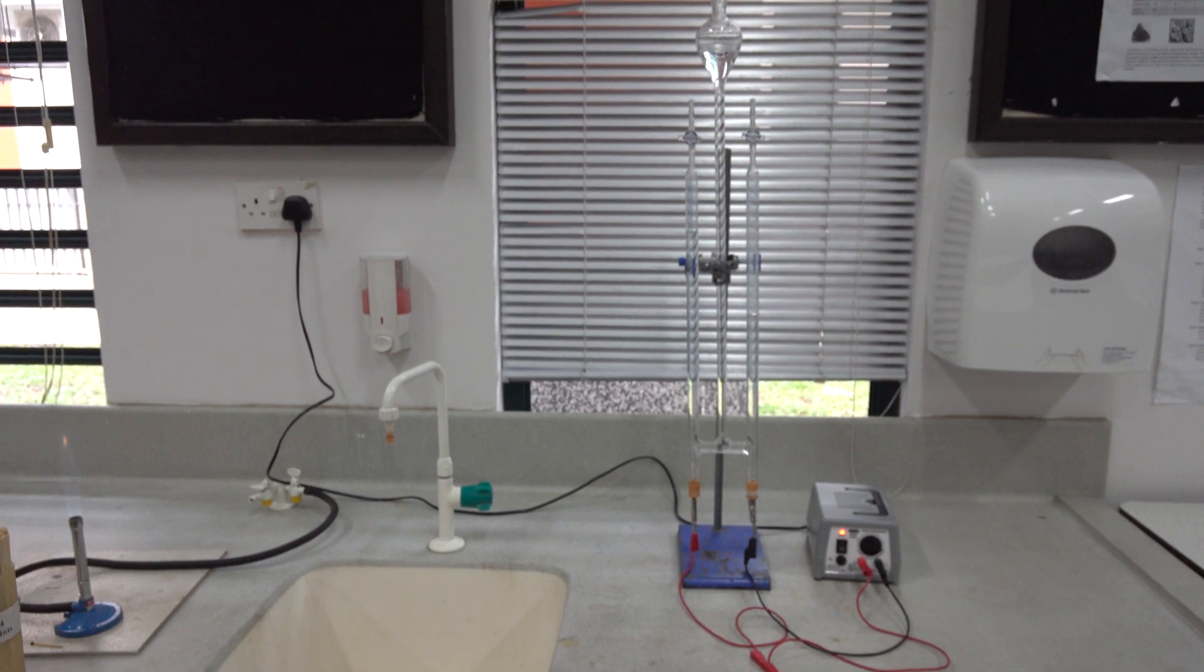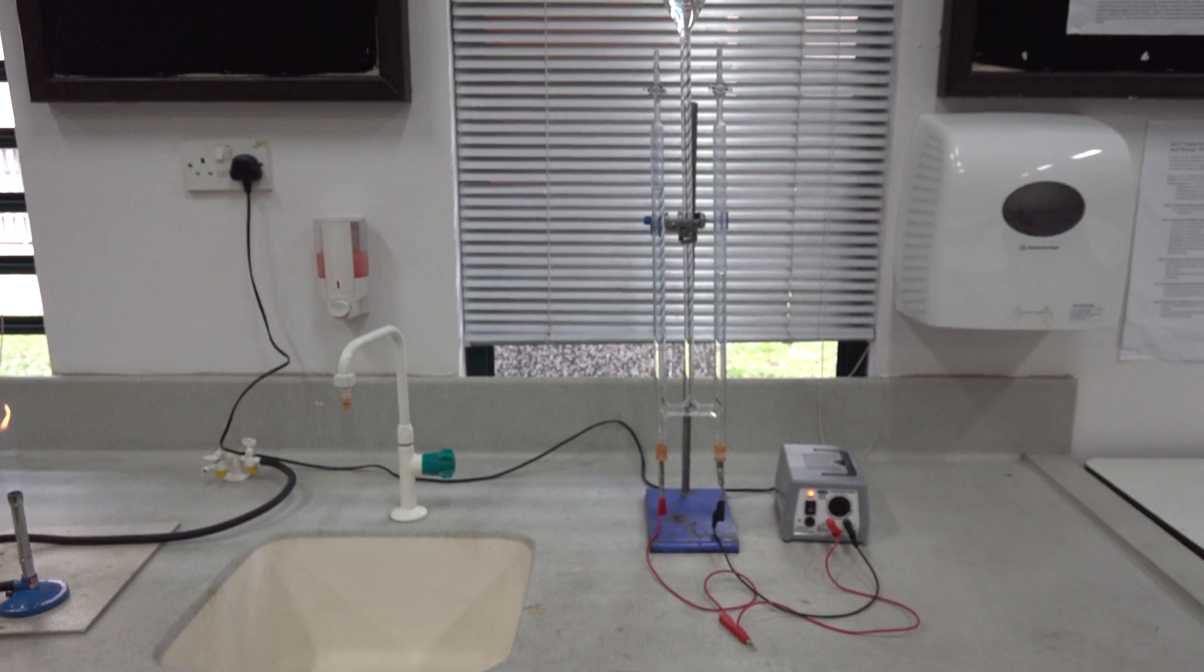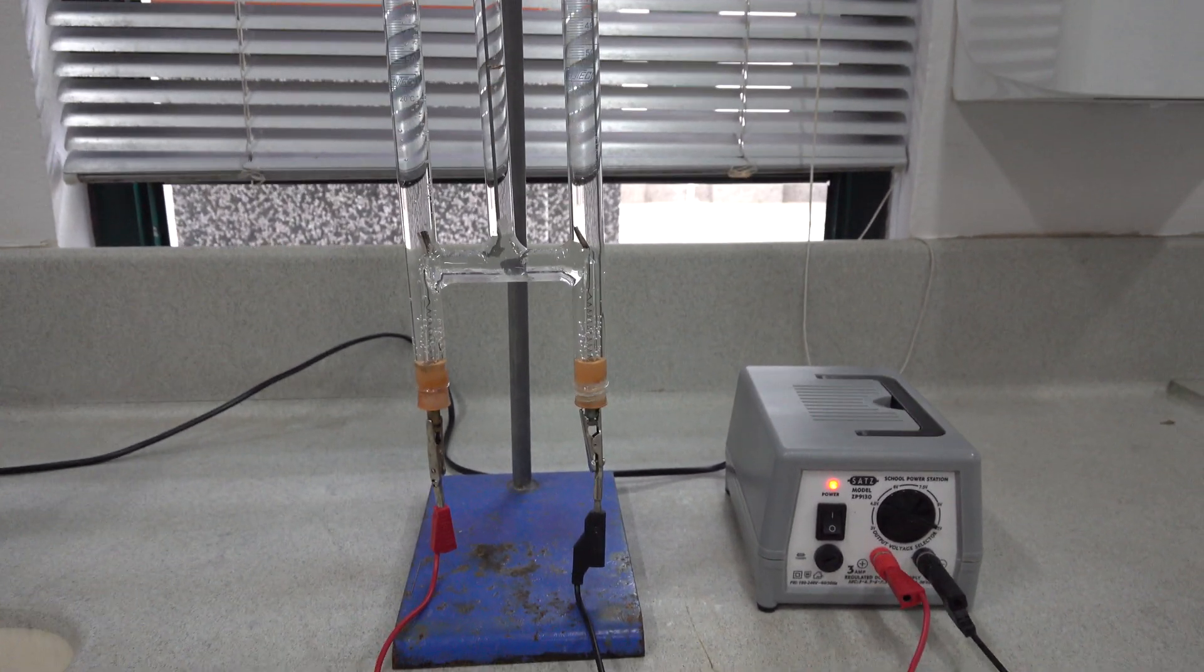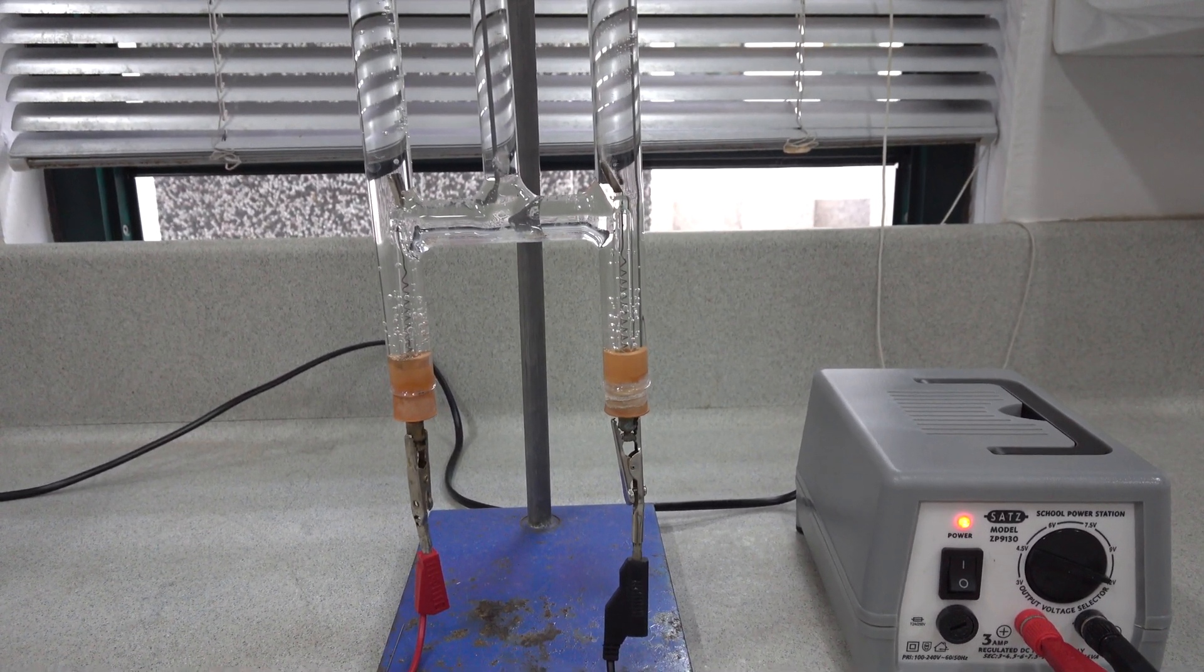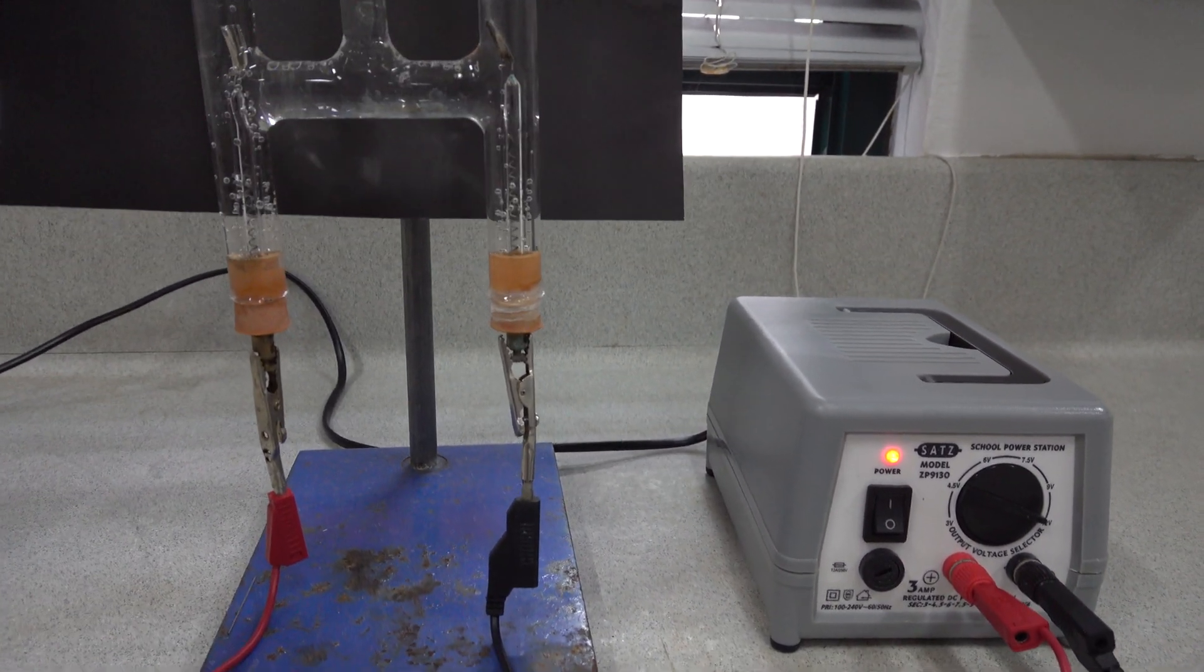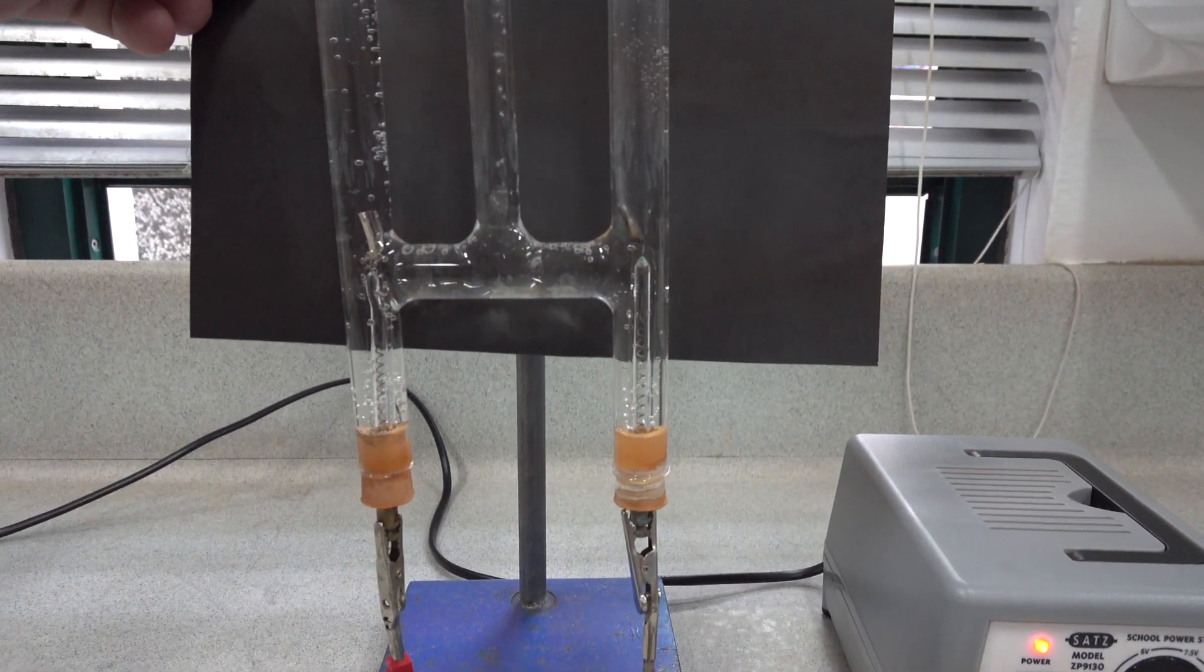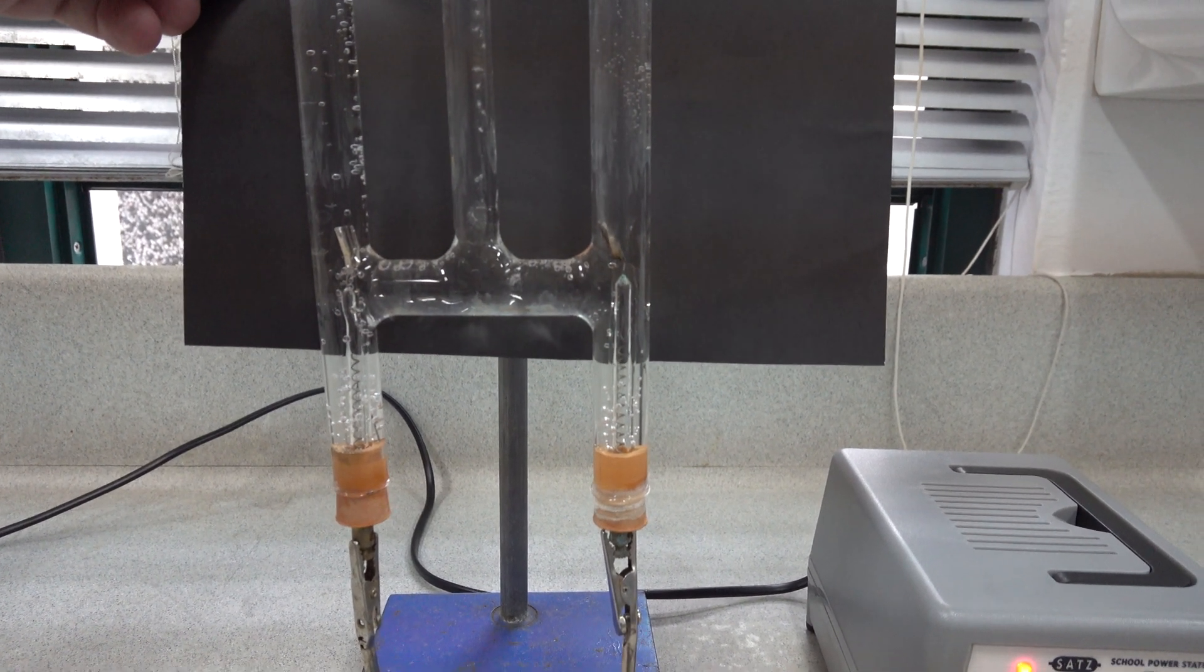The Hoffman voltometer for the electrolysis of dilute sulfuric acid. If we move in a little closer, you should be able to see two platinum electrodes. And if we use the black card, you may be able to detect the evolution of bubbles of colorless gas at the two electrodes.